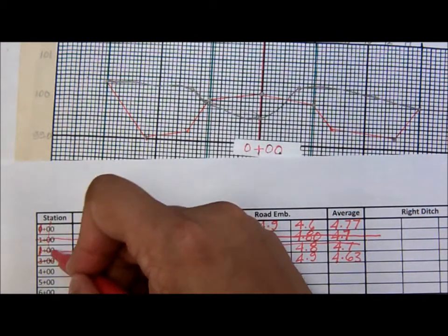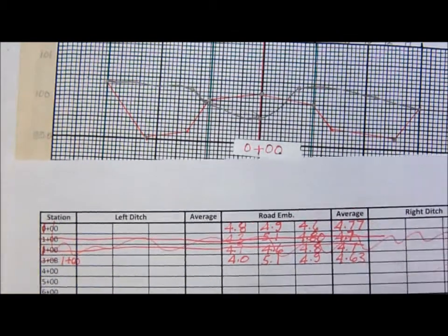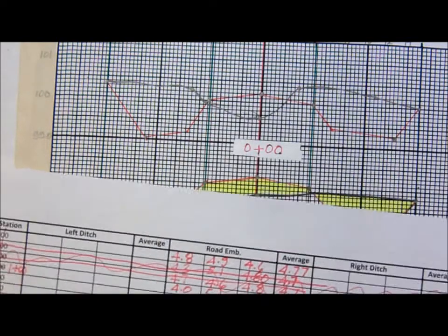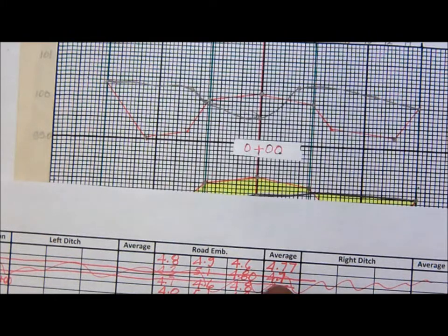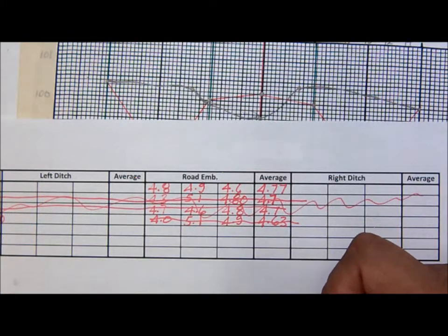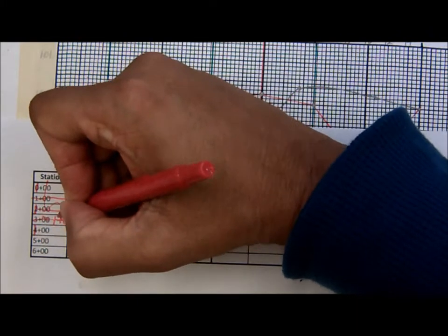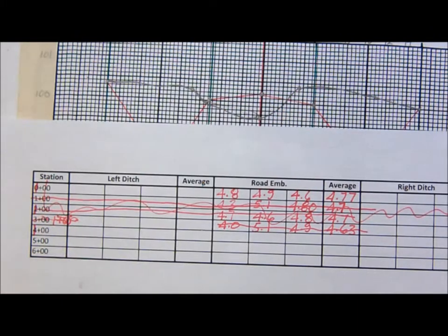I've done a few trials here already. I'm going to change this to one plus zero zero because that's the one I'm going to demonstrate for you. Those numbers are going to be right along one plus zero zero right in here. I'm going to have one, two, three and an average.